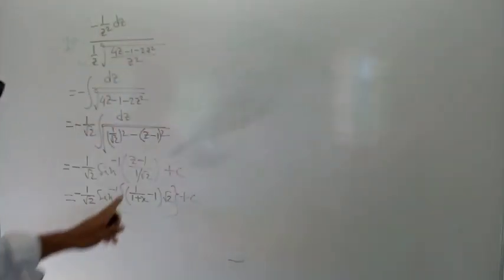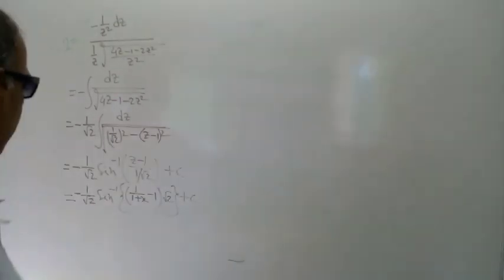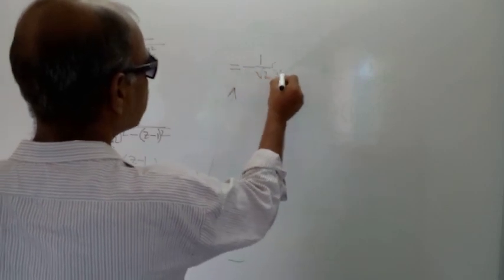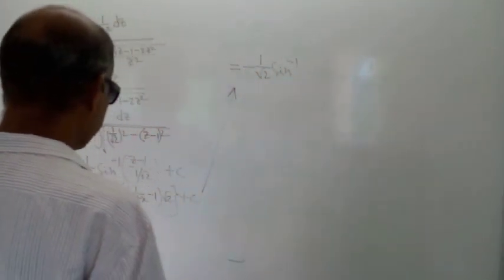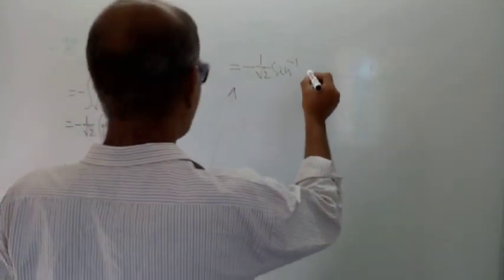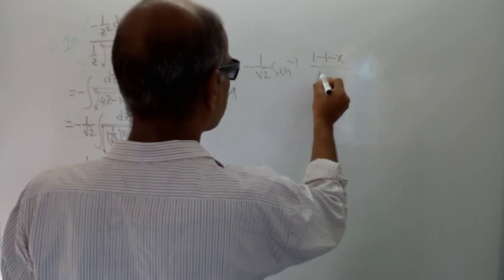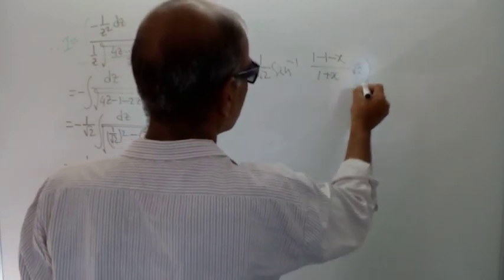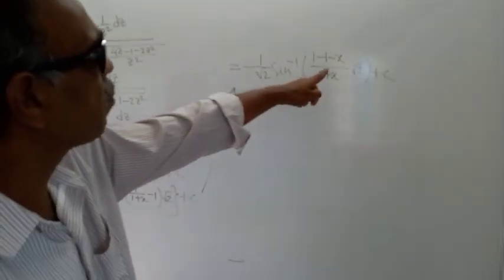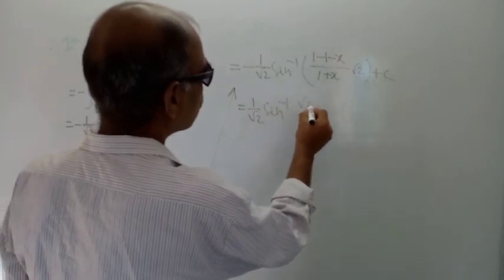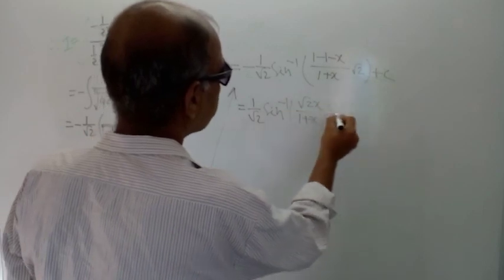Now 1 by (1 plus x) minus 1 gives minus x by (1 plus x). Writing the next line: this is equal to minus 1 by root 2 times sin inverse of (1 minus (1 minus x) by (1 plus x)) into root 2. So here we are getting minus root 2 x in the numerator, and with the negative sign outside it becomes 1 by root 2 times sin inverse of (root 2 x by (1 plus x)) plus c. This is the answer to the given problem.